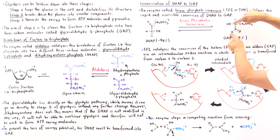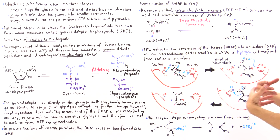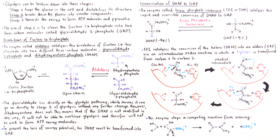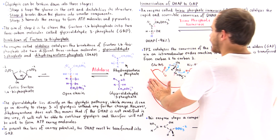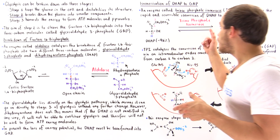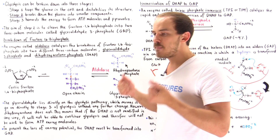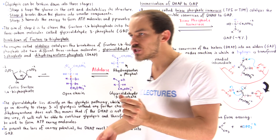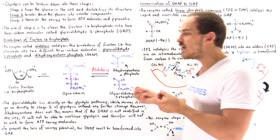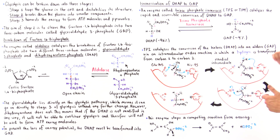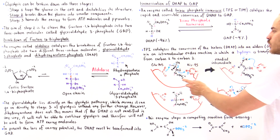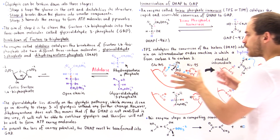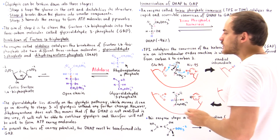Now let's look at what happens within the active site of this enzyme, using four diagram pictures. Inside the active site we see alpha-beta barrels, and there are two catalytic residues that carry out this reaction via an acid-base mechanism: GLU-165 and HIS-95. In the first step, GLU-165 acts as a base and HIS-95 acts as an acid. HIS-95 donates an H to the carbon while GLU-165 acts as a base and removes the H from carbon 1, breaking that bond and reforming a pi bond between carbon 1 and carbon 2.